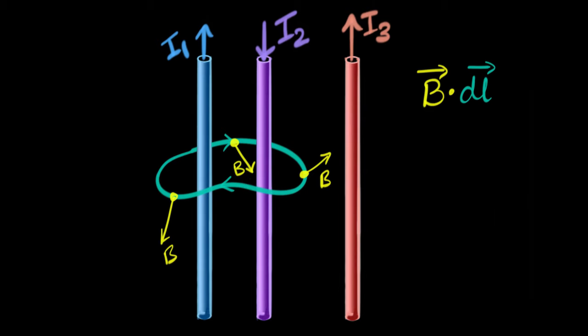Now what Ampere says is that as I'm walking, at every point, take a tiny step length, which is DL, and you'll have a direction tangential to this path. So over here, DL would be this way. Over here, DL would be this way. And over here, because I'm walking like this, DL would be this way. You can imagine DL to be a very tiny step, like a nanometer or something. It's an infinitesimally small step.